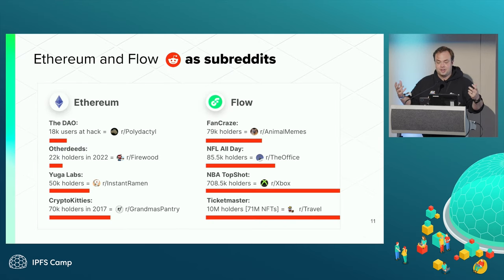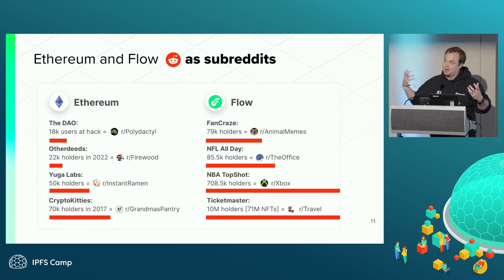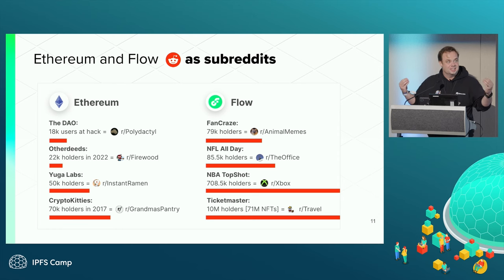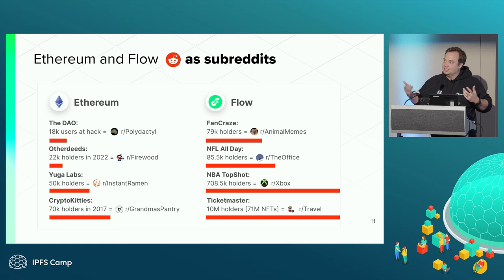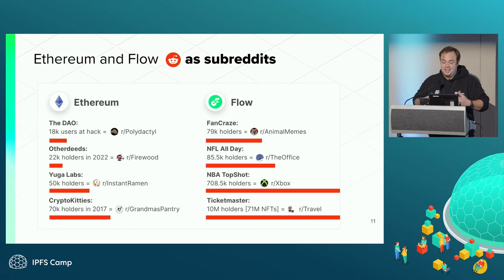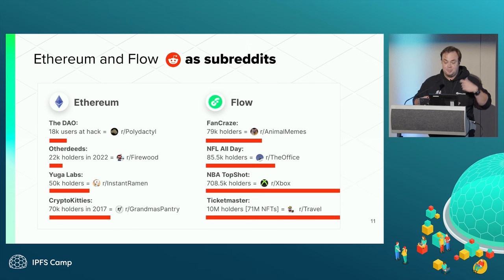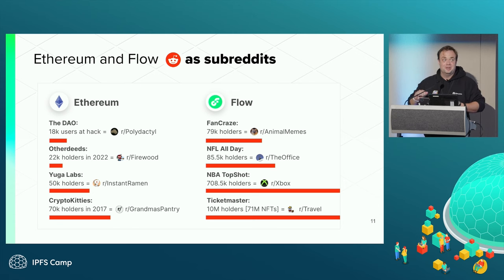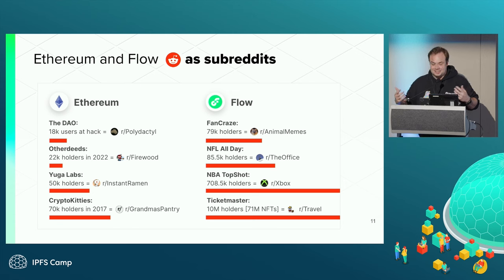To articulate the size and scale of these communities, consider subreddit comparisons. The DAO hack, when it saw massive scalability issues, had roughly 18,000 users at the time — the same size as the polydactyl Reddit community, which shares photos of cats with extra digits. The Otherside deeds scalability issue in 2022 was the same size as the firewood community on Reddit — people discussing how to chop, stack, and rack firewood most effectively.